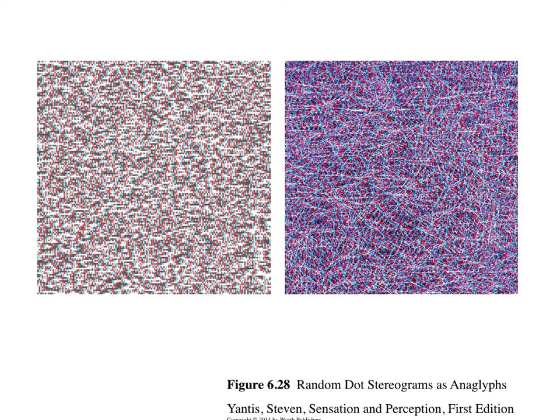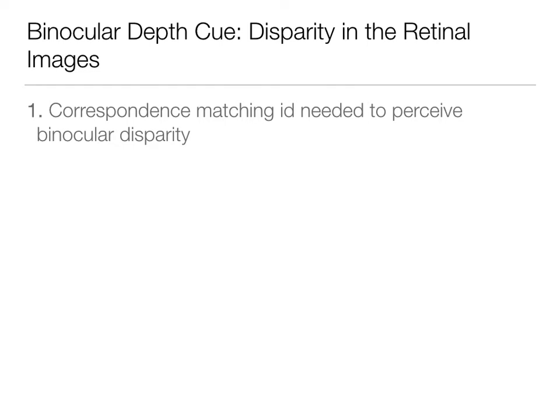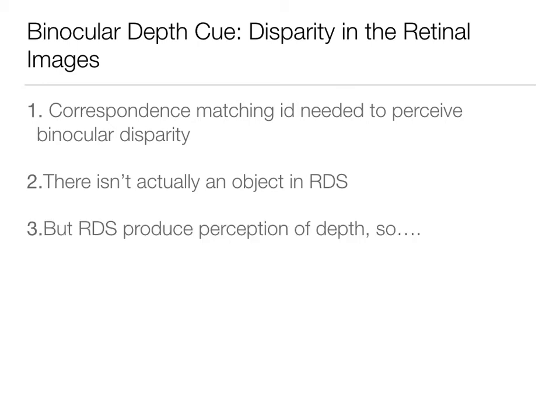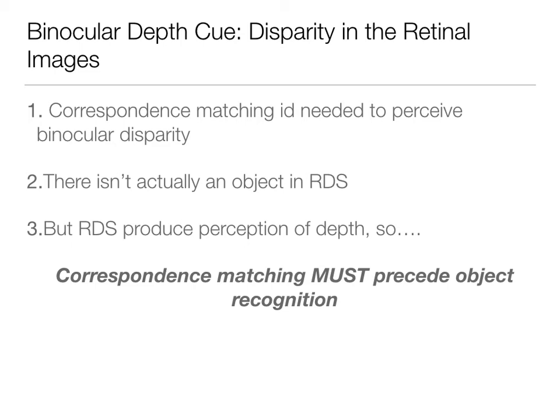Pause if you don't want a spoiler alert. On the left you'll see an X; on the right you'll see a heart. And again, these are done as anaglyphs with those color differences. So what this experiment told us about these random dot stereograms is that correspondence matching is needed to perceive binocular disparity. There isn't actually an object in any of these RDSs — in these random dot displays, there's not actually an object there, it's random dots. But the RDS produces this perception of depth, this perception of an object. So this tells us that correspondence matching must precede object recognition. Because we're seeing an object that's actually not there, we are able to say that correspondence matching must be happening before we assign a label to it.